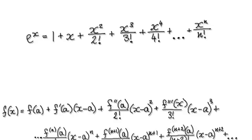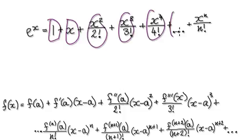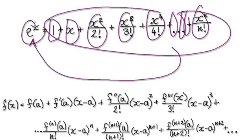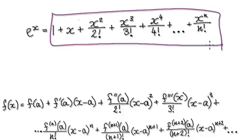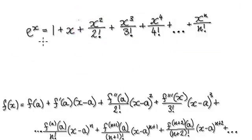In this video, we're going to try and understand why it is that when you keep on adding all these terms all the way to infinity, the whole series is equal to e to the power of x. In the past, you would just accept that if you sum up everything all the way to infinity, then the whole series equals this. In this video, we're going to try and understand why that's the case.